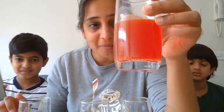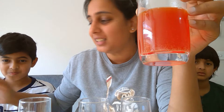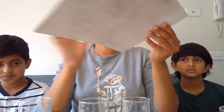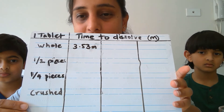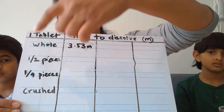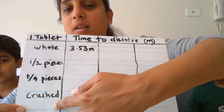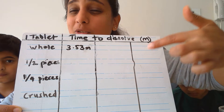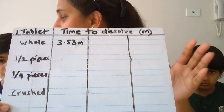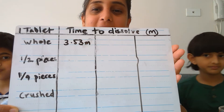Finally, this tablet dissolved — the entire tablet took 3 minutes and 53 seconds. We've made a little table because it's very important to document the readings we get. I've got columns for the tablet when it's halved, quartered, and crushed, and I'm going to be documenting the time. We need at least three readings to get reliable data. Now let's move on and see the next stage.